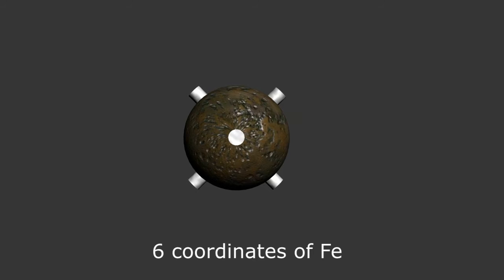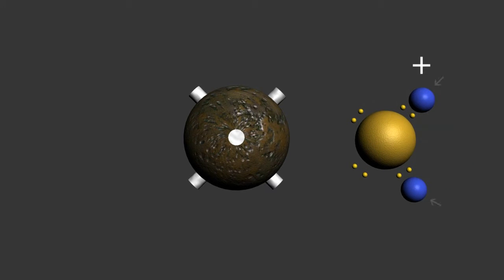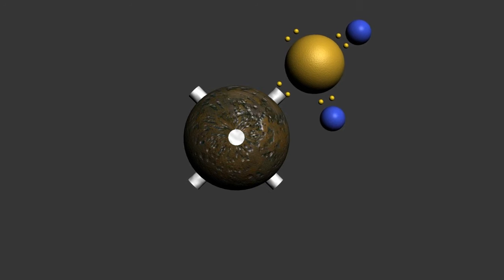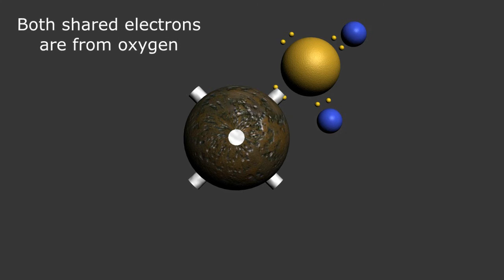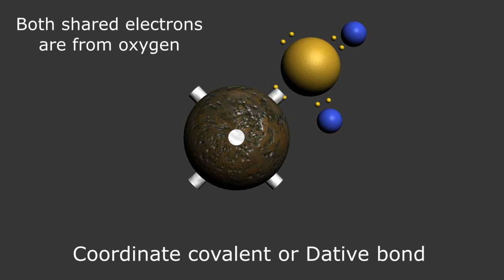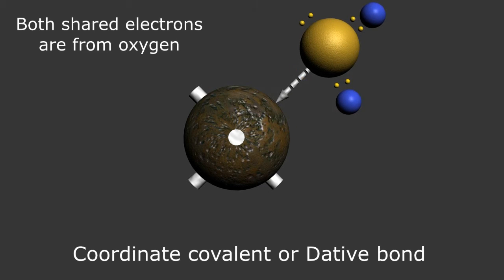Looking at water, you can see the molecule is polar, with the positively charged hydrogens asymmetrically binding to the oxygen. The two free electrons on the far side of the oxygen make this portion of the molecule slightly negative. These free orbital electrons are the ones that oxygen shares with iron to form a chemical bond. Since both electrons originate from the oxygen atom with no contribution from iron, this is called a coordinate covalent, or dative bond, represented with a dashed arrow to indicate the asymmetric participation of the atoms.